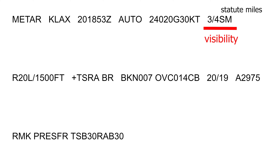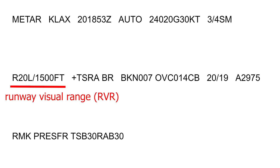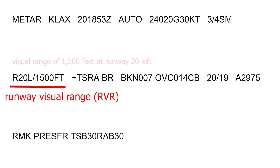Next is visibility reported in statute miles as denoted by the letters SM. The visibility is reported in both miles and fractions of miles. In this case, the visibility is three-quarters of a statute mile. METAR may also contain runway visual range or RVR at a particular airport, showing the expected distance a pilot can see down the runway. RVR is shown with the letter R followed by the runway identifier, then a slant symbol and the visual range in feet. In our case, we have a visual range of 1,500 feet on runway 20 left.